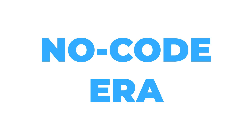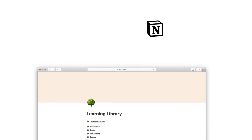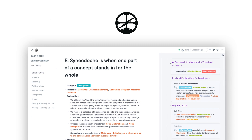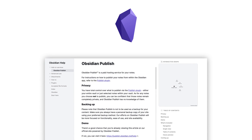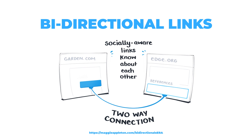Digital gardens can be crafted using many different tools. The no-code era has definitely made it easier, and tools like Notion, Roam, Obsidian, and some of the other wiki tools are very popular as they require very little servicing. This is mainly due to bi-directional links, which help you to connect thoughts together in a digital garden and offer the learner a deeper, more embedded way of learning.